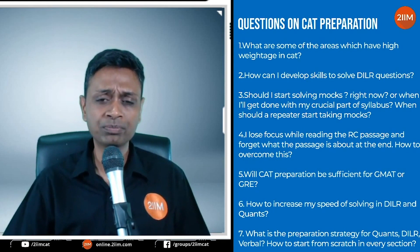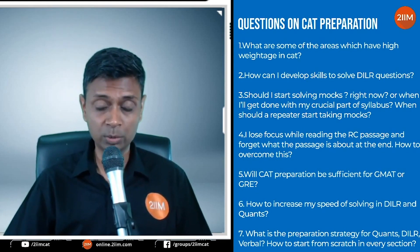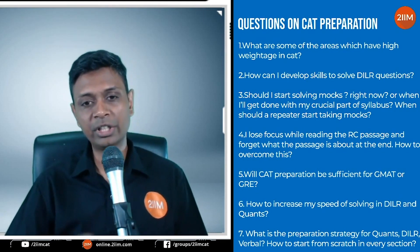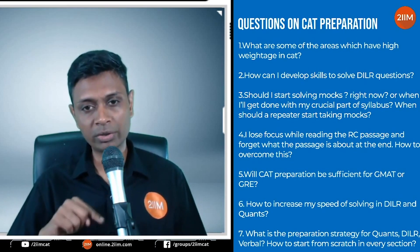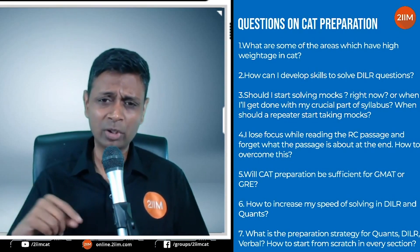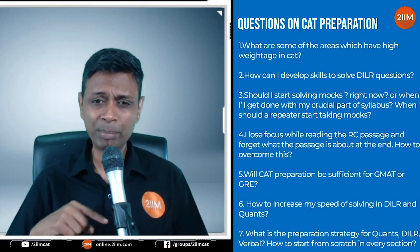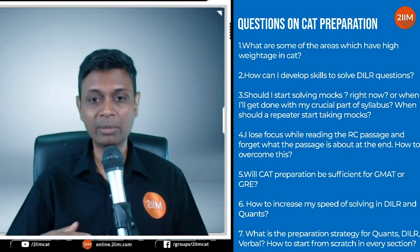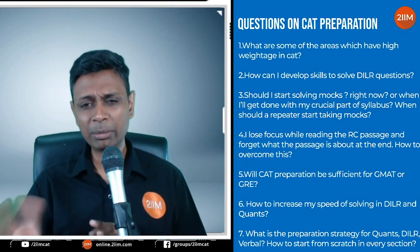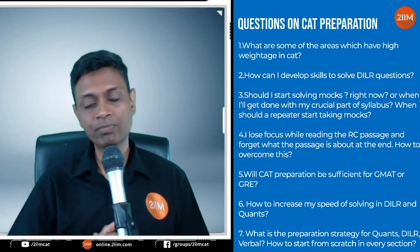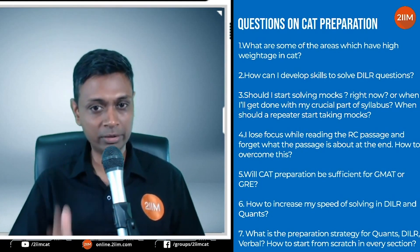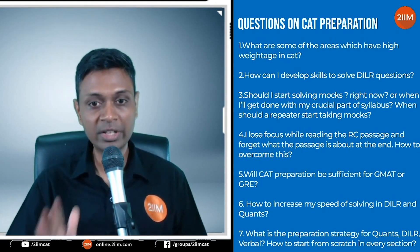In quant, the elephant in the room is arithmetic — which includes ratios, mixtures, speed-time, races, percentages, profit and loss, simple interest, compound interest, averages, basic equation solving, linear equations, pipes and systems, work-time, and progressions. Give or take, half the paper is this. That's the elephant in the room.